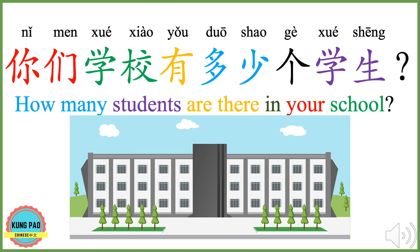你们学校有多少个学生? 你们 means your. 学校 means school. 有 means have or there are. 多少 here means how many. 个 is the most commonly used measure word in Chinese. 学生 means students. 你们学校有多少个学生 means how many students are there in your school? Now you can try.